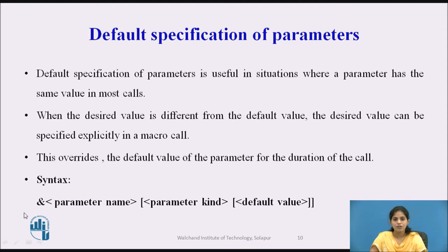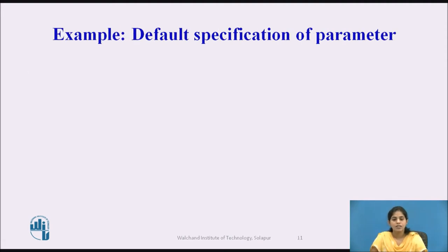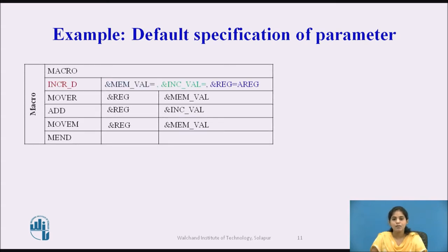The syntax is: &PARAMETER_NAME, then the parameter kind, then the default value. In the example, the macro name is INCRD. It has three parameters: &MEMORY_VAL=, &INC_VAL=, and &REGISTER=A_REGISTER. For the third formal parameter, the default value A_REGISTER is assigned to REGISTER.